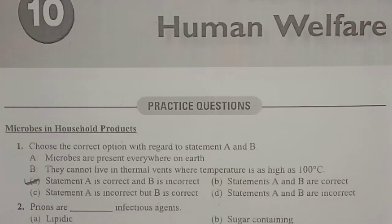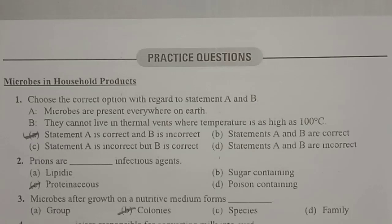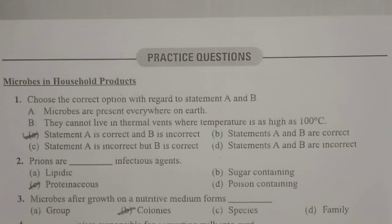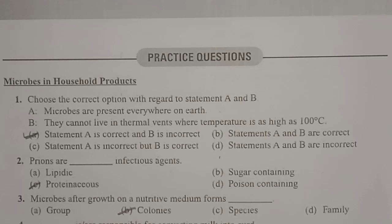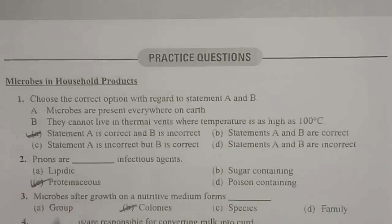Next question: prions are. You have already studied viruses, viroids, and prions. Prions are actually proteinaceous infectious agents because they are mainly made up of proteins. That's why we call them proteinaceous infectious agents, and they mainly cause diseases in plants. So prions are the proteinaceous infectious agents.